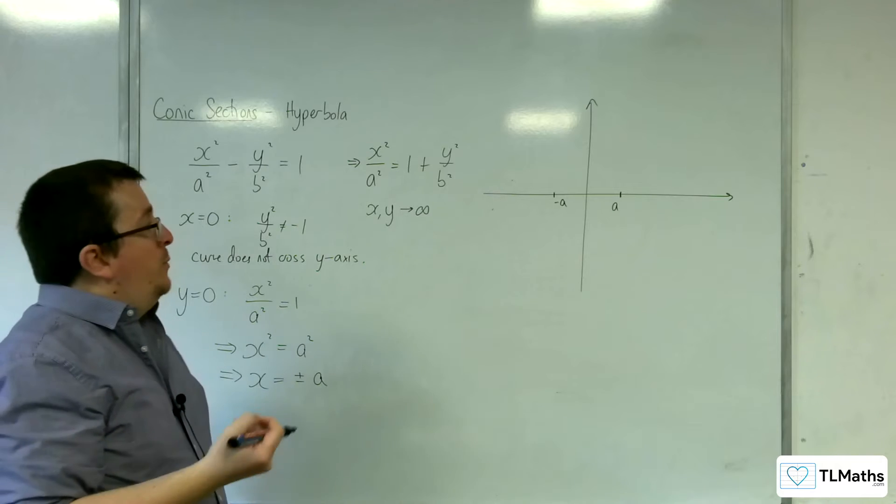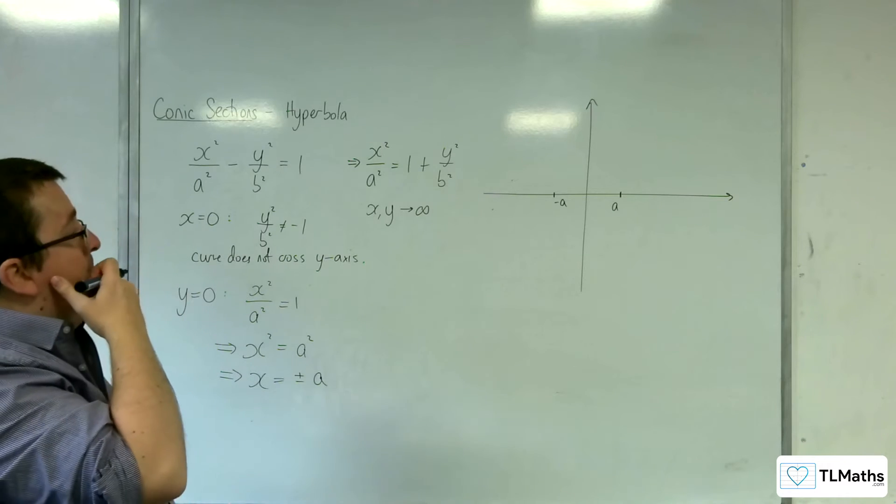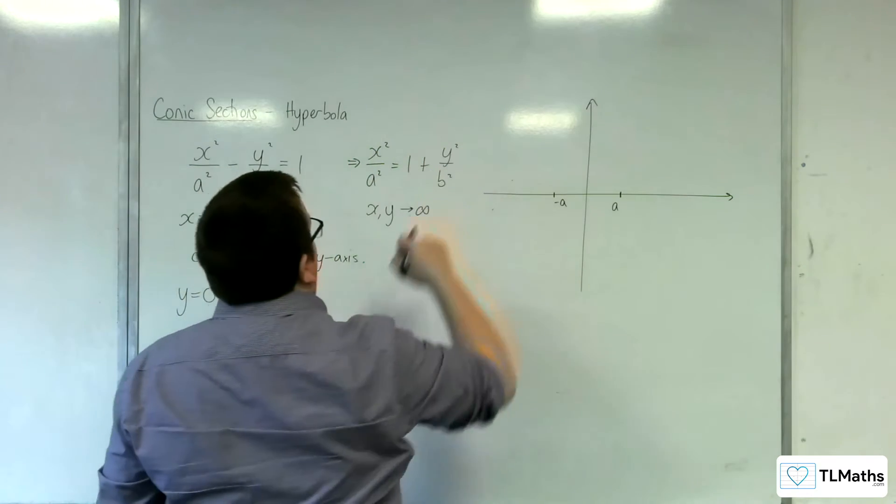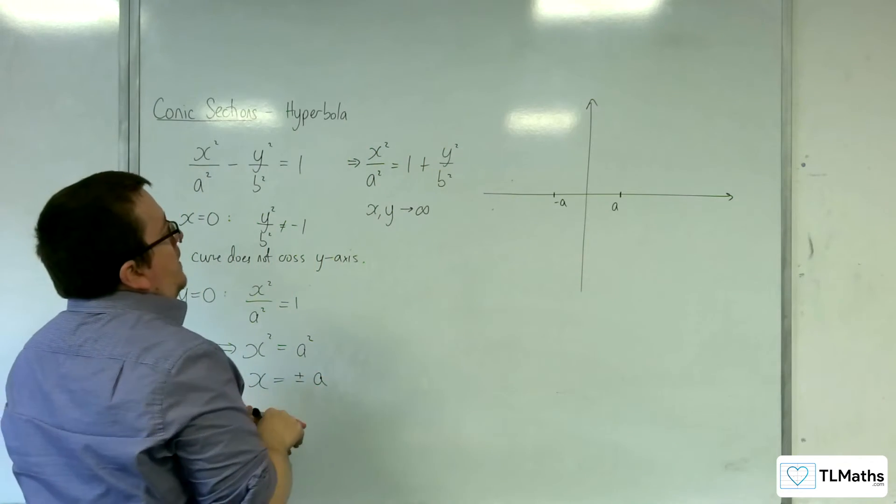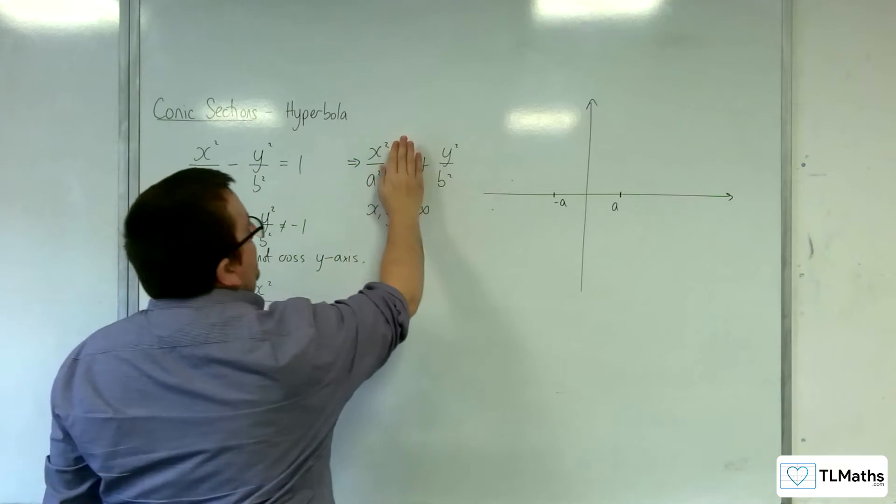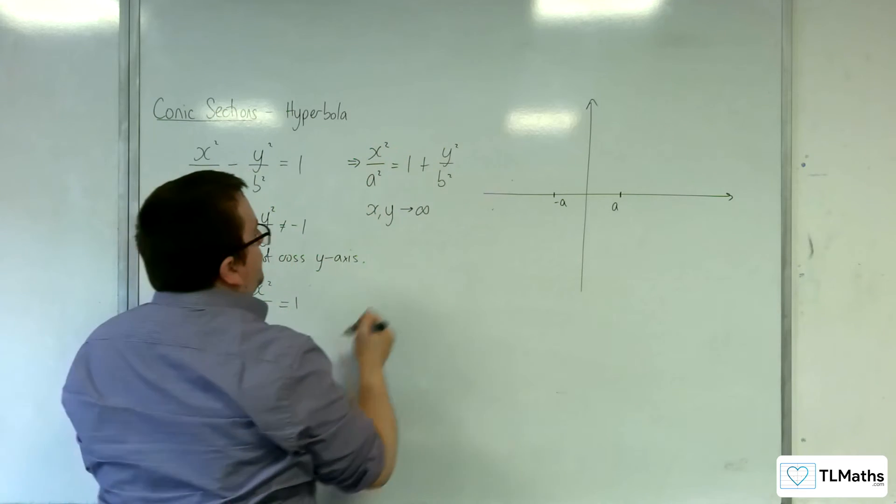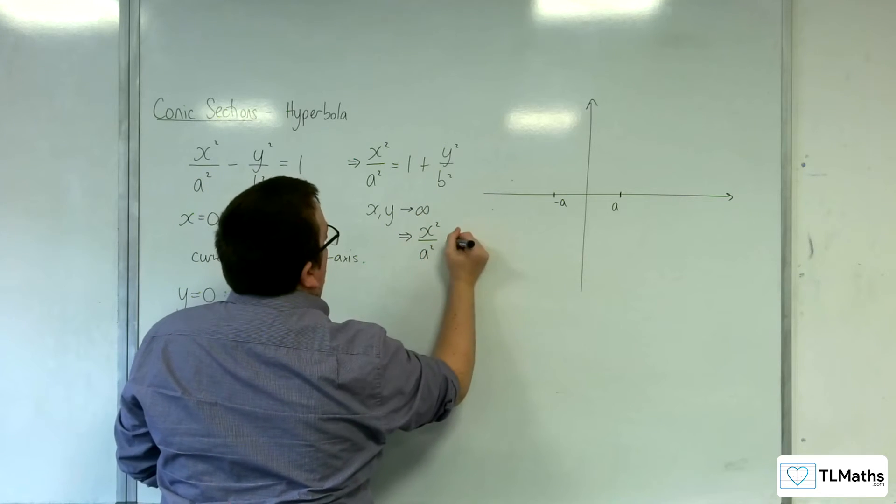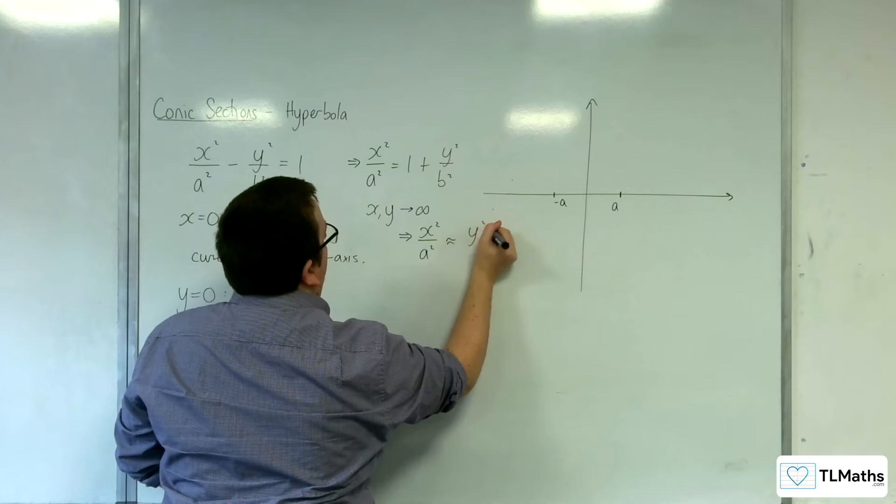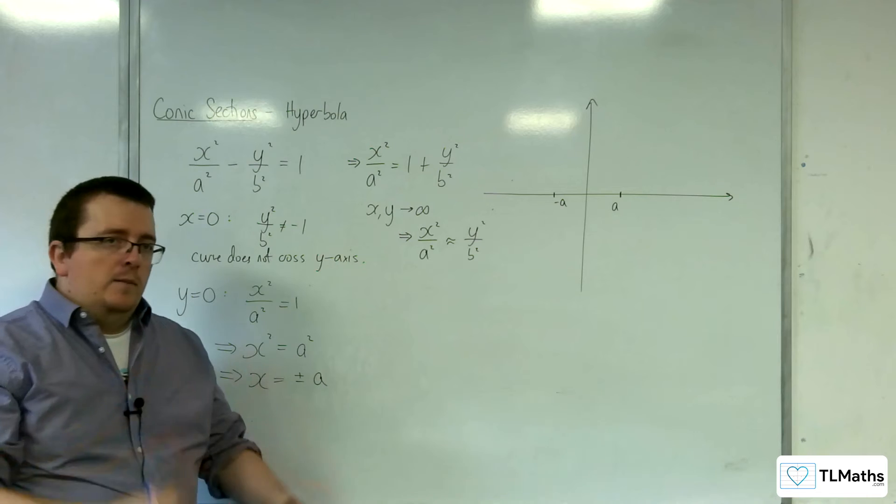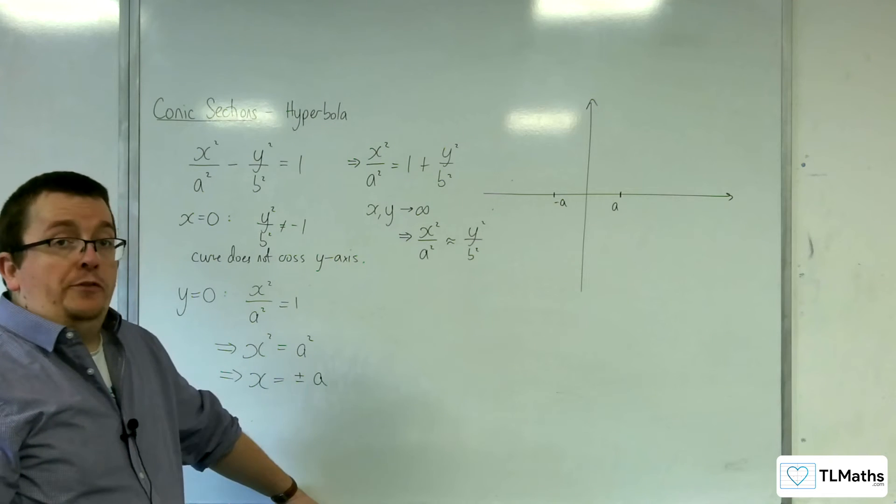So as x and y tend to infinity and get larger and larger and larger, the a squared and b squared, remember, they stay fixed. They're staying the same. So this value and this value will get larger and larger and larger. The 1 will dip into insignificance. And so what we'll get is that x squared over a squared will become approximately y squared over b squared. They will get closer and closer and closer to one another.